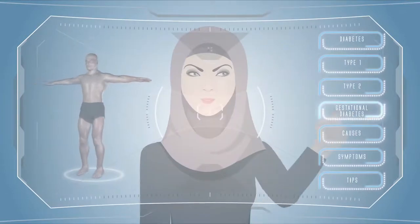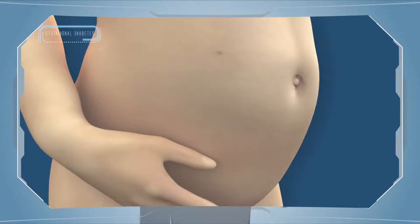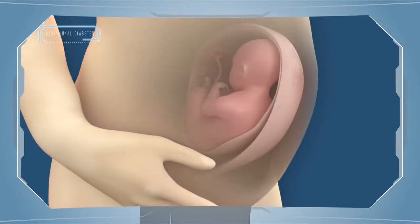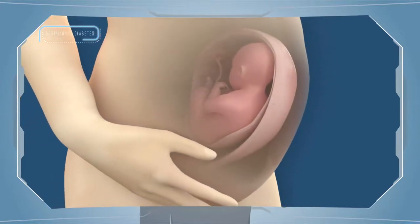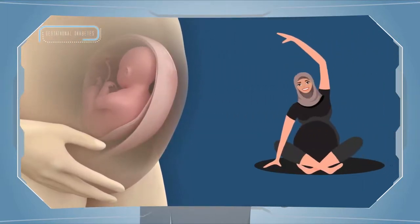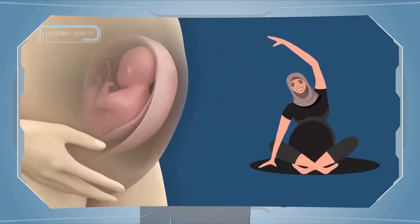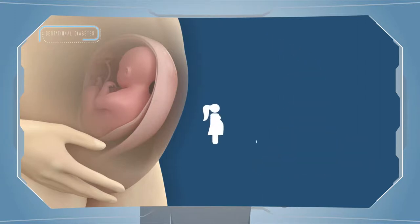The third type is gestational diabetes. Gestational diabetes affects females during pregnancy. It can lead to complications for both mother and child. It can be controlled with exercises and medications.